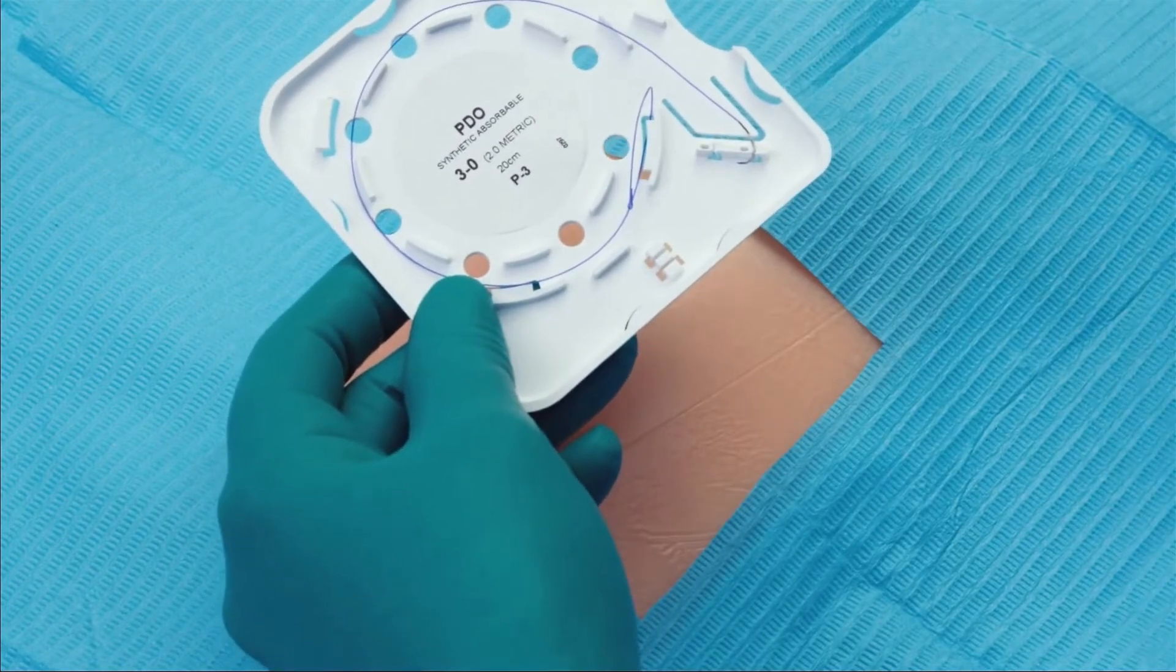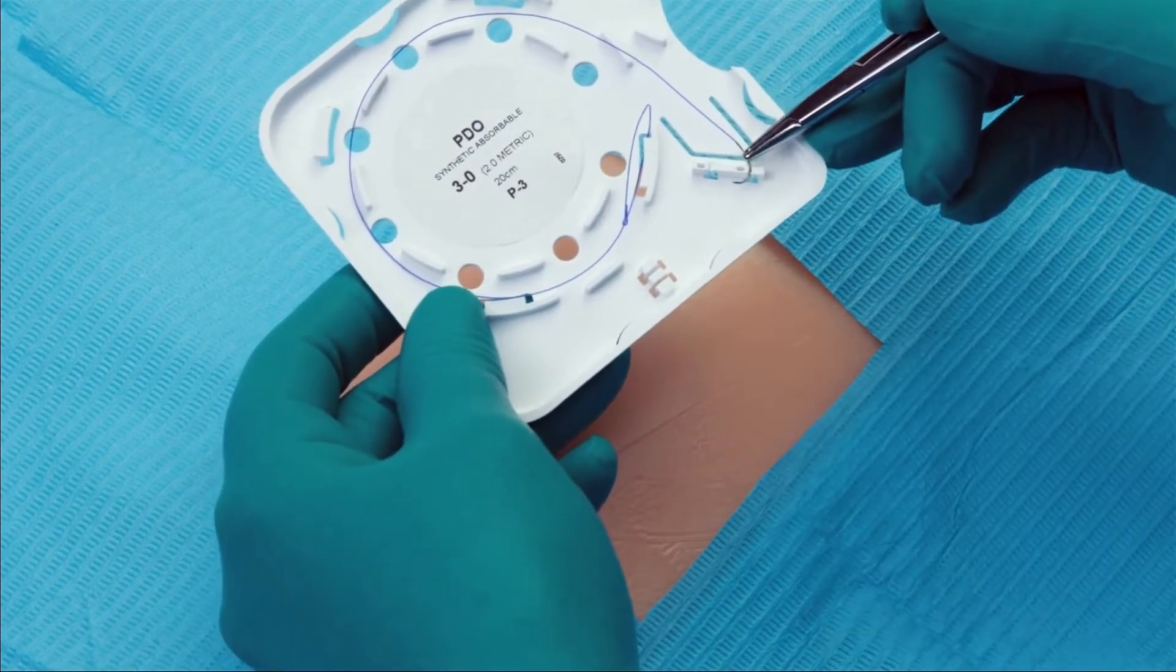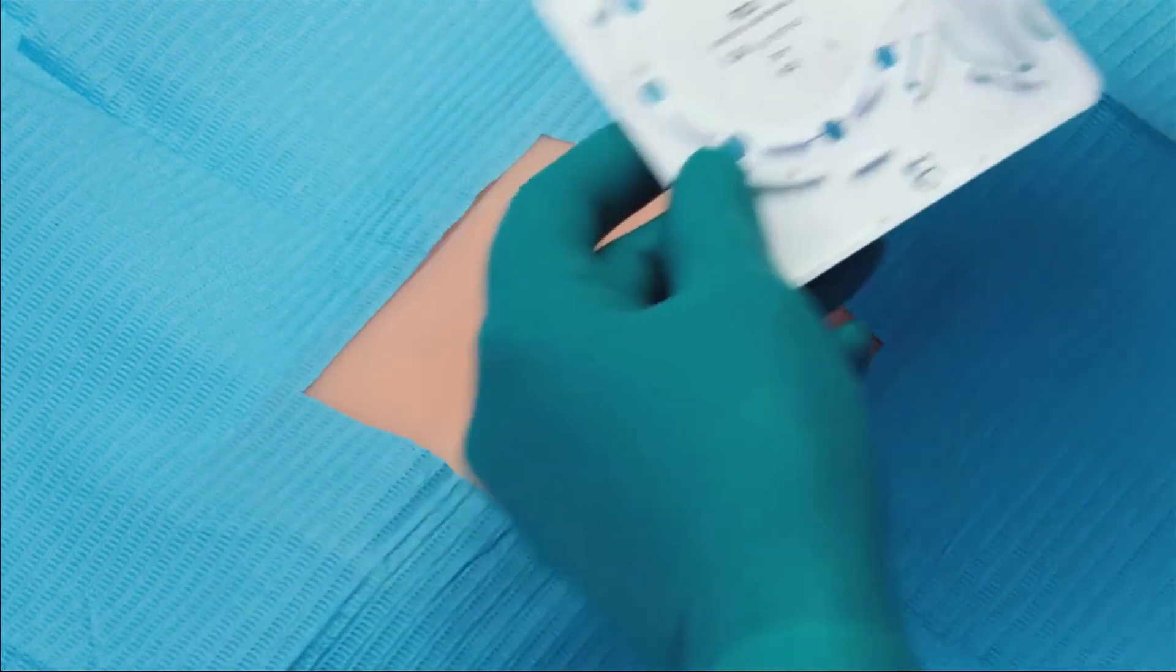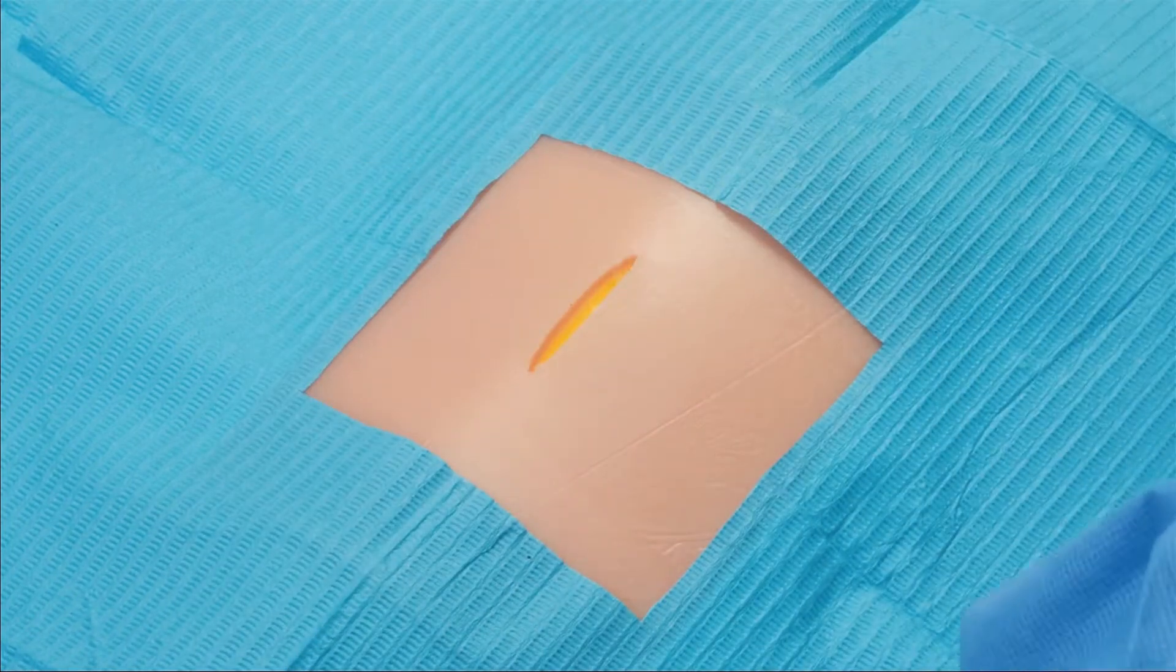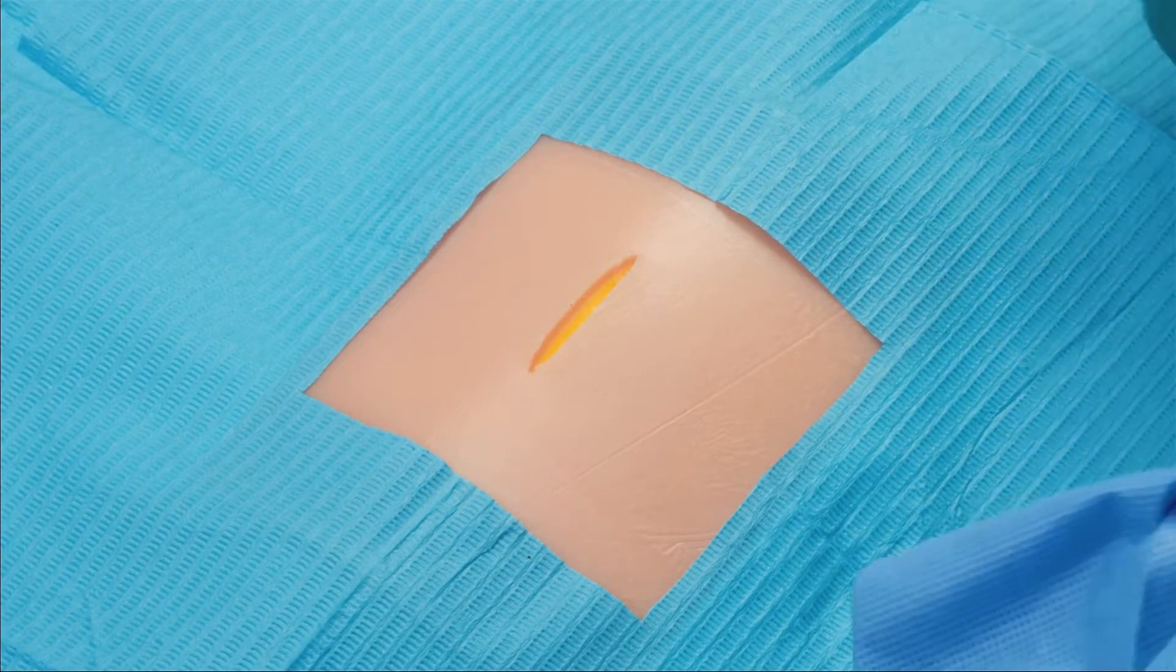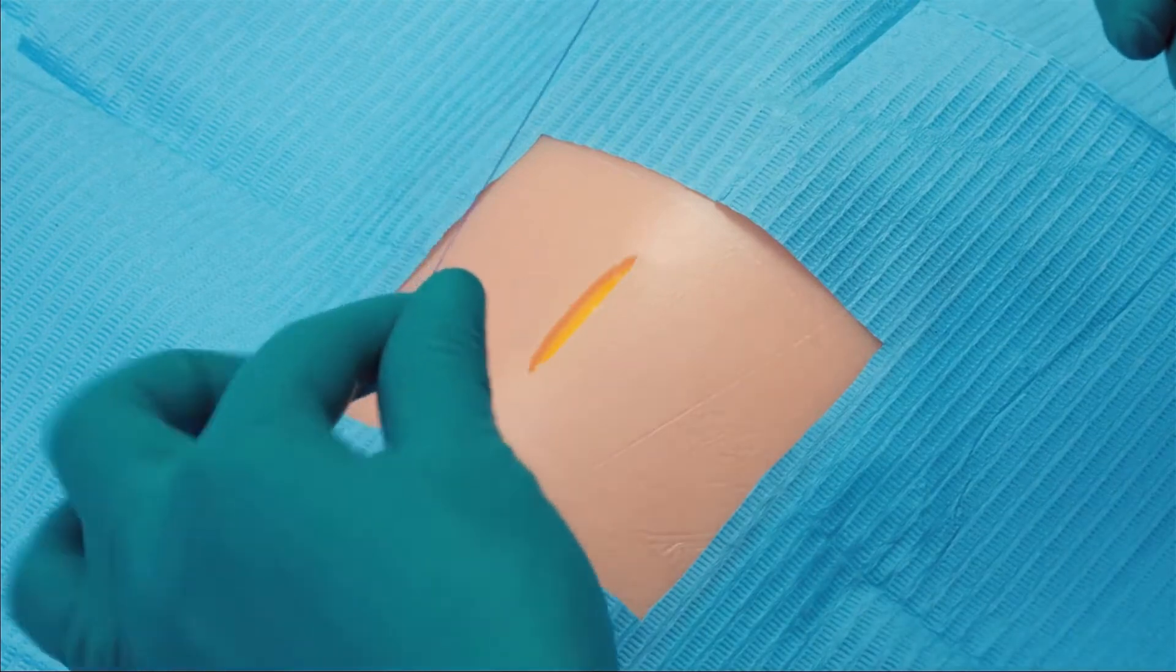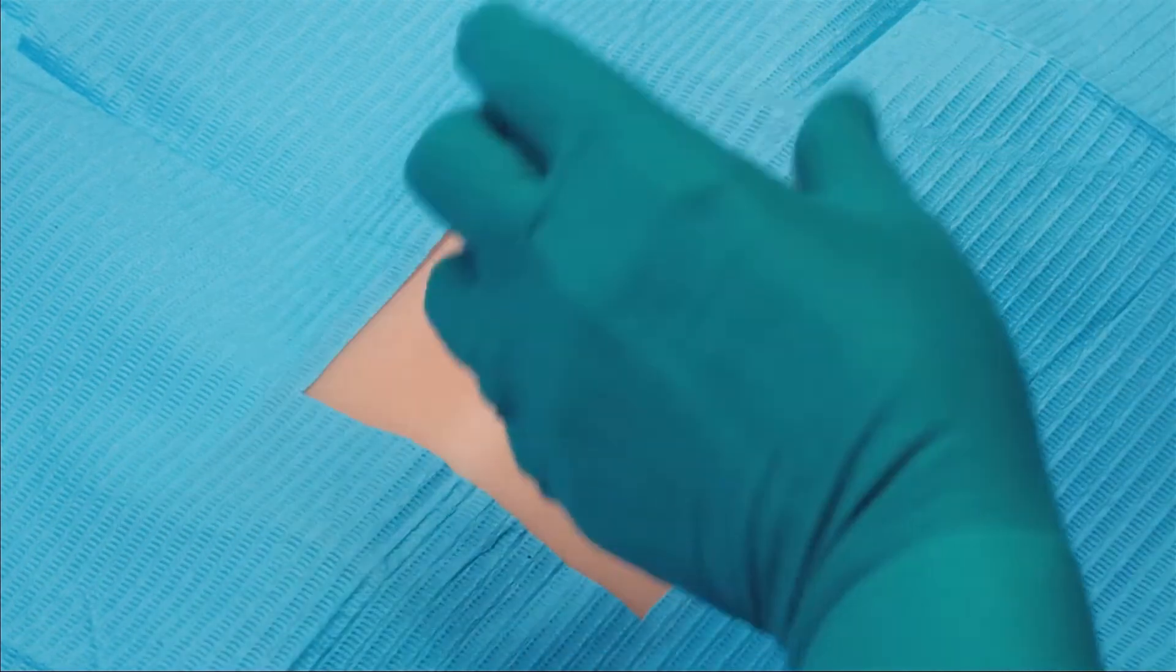We have the needle here, and a little loop. Here, we are looking at a surgical defect after excision. We will be approximating the deep dermal layer with a quill device.